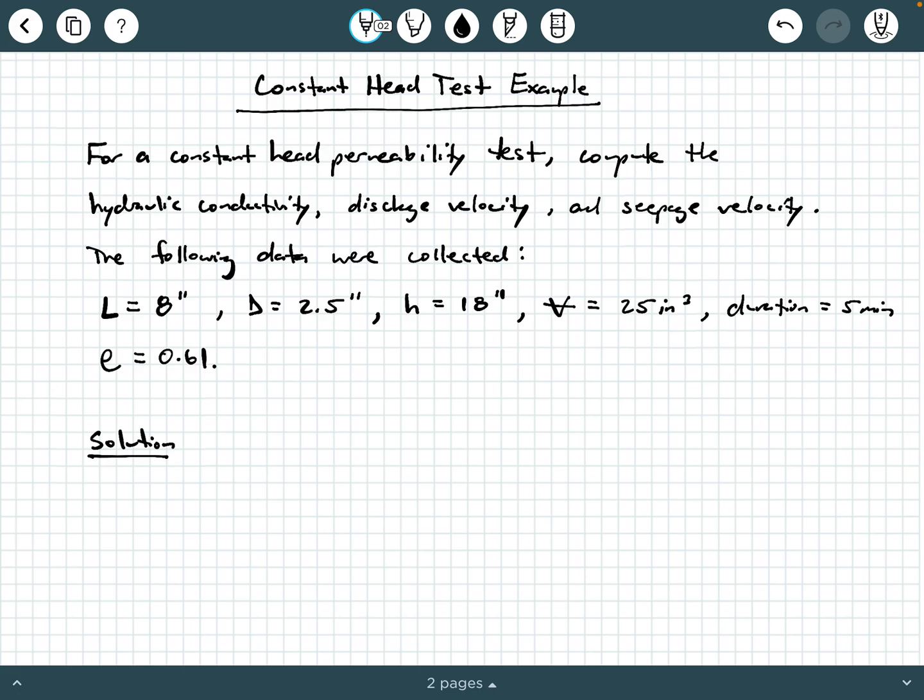So let's go ahead and see what we're given. We're being told that for a constant head permeability test, compute the hydraulic conductivity, the discharge velocity, and the seepage velocity. And we're being told that the following data was obtained.